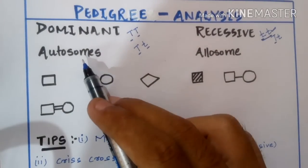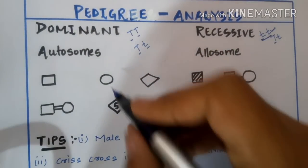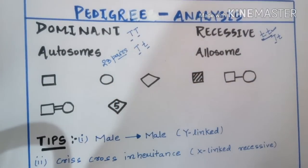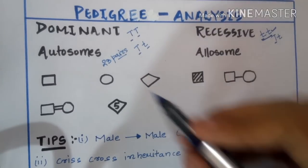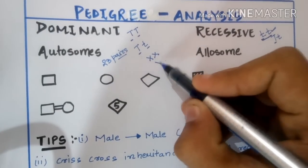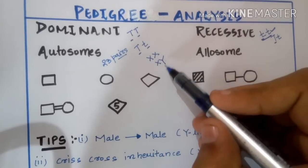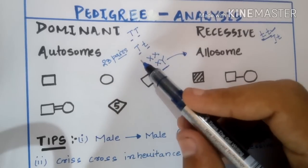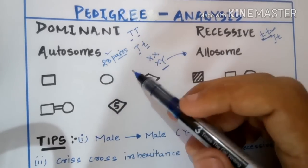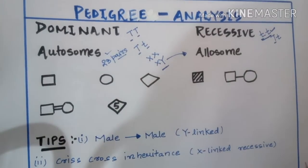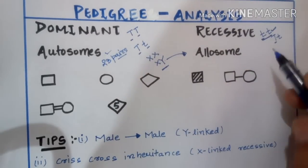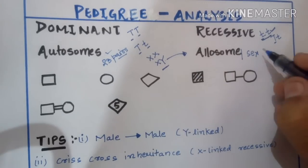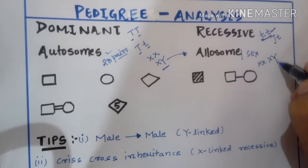Now, you need to know the difference between autosomes and allosomes. There are 23 pairs of chromosomes in each human cell. Two of these are sex chromosomes — XX in females and XY in males — and these two are called allosomes. The remaining 22 pairs, or 44 chromosomes, are autosomes. We will use the term 'autosomal disease' going forward, so it's important to distinguish autosomes from sex chromosomes.